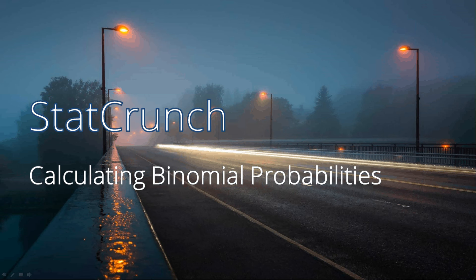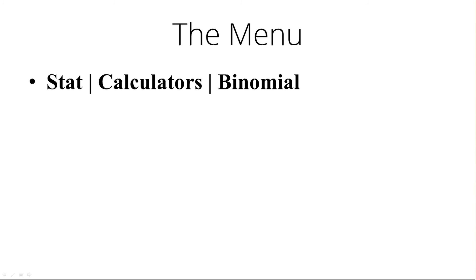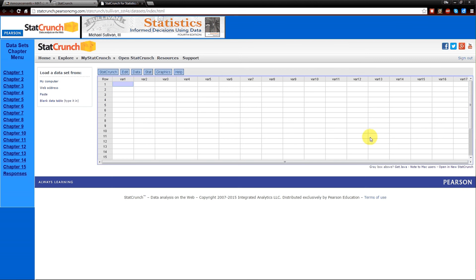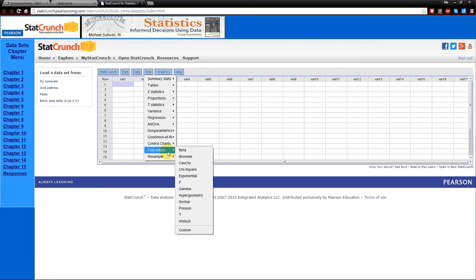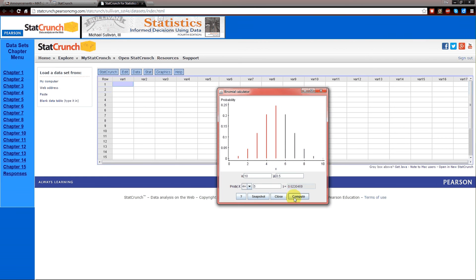Binomial probabilities can be calculated in StatCrunch. You go to the menu, it's Stat, Calculators, Binomial. So here we are in StatCrunch, Stat, Calculators, Binomial. And this window pops up.